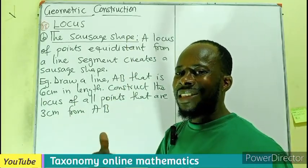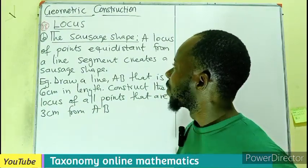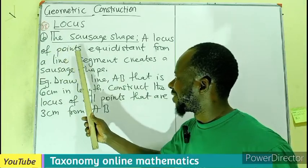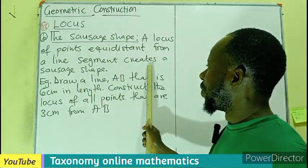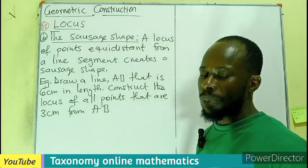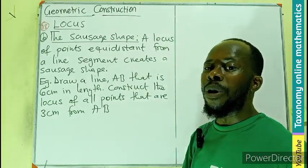How do we get the phrase that made us construct a sausage shape? A locus of points equidistant from a line segment creates a sausage shape. So if you are asked to construct a locus which is equidistant from a line segment, then your construction is going to give rise to a sausage shape.